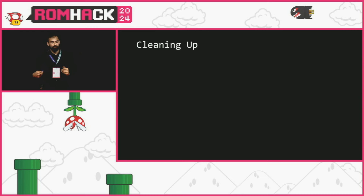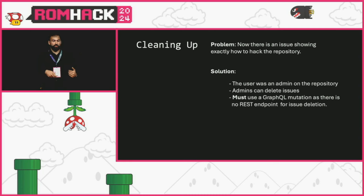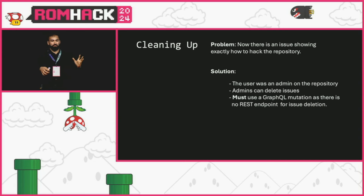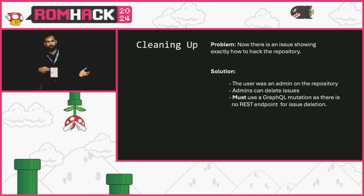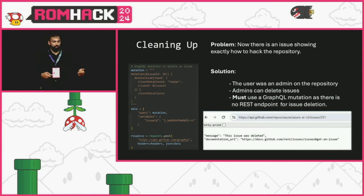After creating my proof of concept, there was now something showing exactly how to get a fairly privileged token from an Azure-owned repository. The token belonged to the maintainer, who was also an admin. Administrators can delete issues, and there was an obscure GraphQL mutation that could be used for deletion since GitHub hasn't released a REST API endpoint for that functionality. I went ahead and deleted the issue — hiding the evidence — which also helped justify the impact of the submission.